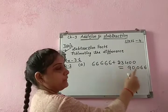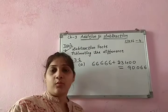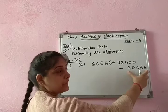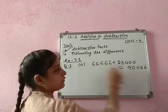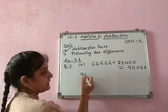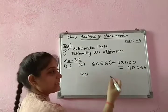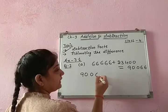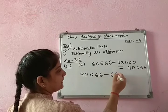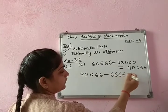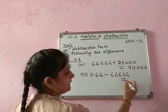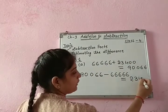When we add these two numbers, it gives us 90,066. Now when we are writing the subtraction facts, from the bigger number we subtract the smaller one. Out of these three numbers, 90,066 is the bigger one. So for the first subtraction fact, from the bigger number I subtract 66,666, and I get 23,400.